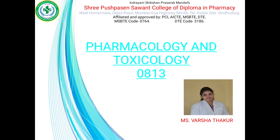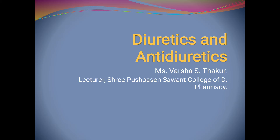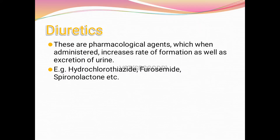Hello everyone. In the previous lecture we discussed the chapter on drugs acting on blood and blood forming agents. Let's start with the next chapter, that is diuretics and anti-diuretics. Diuretics are pharmacological agents which, when administered, increase the rate of formation as well as excretion of urine.